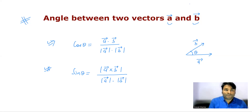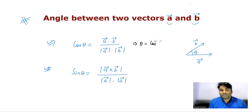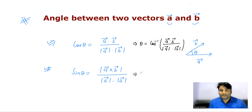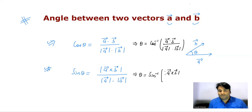From these we can write: theta is equal to cos inverse of (a dot b) divided by (|a| times |b|). Similarly, theta is equal to sin inverse of |a cross b| divided by (|a| times |b|).